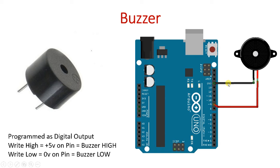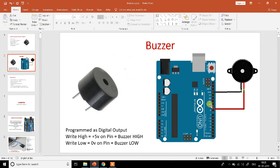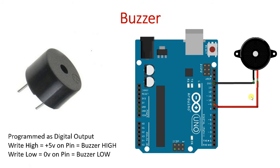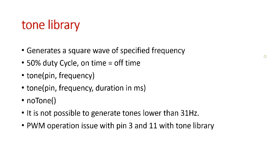When writing a program for this buzzer, all you need to do is make that particular Arduino pin high or low. By making it high and low, the buzzer will either turn on or turn off, generating some sound. If you experiment with the on time and off time — or switch it at a very fast rate — you can generate several different tones.